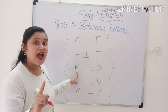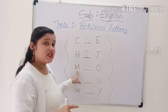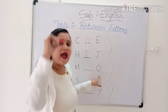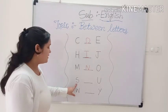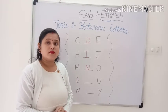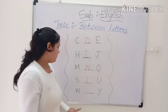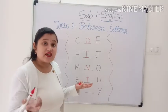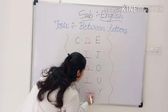Now, which letter is this? M. And which letter is this? O. And which letter comes between M and O? N. Capital N. Now this is capital S and this is U — which letter comes between S and U? T. And this is capital W and this is capital Y — which letter comes between W and Y? X. Very good.